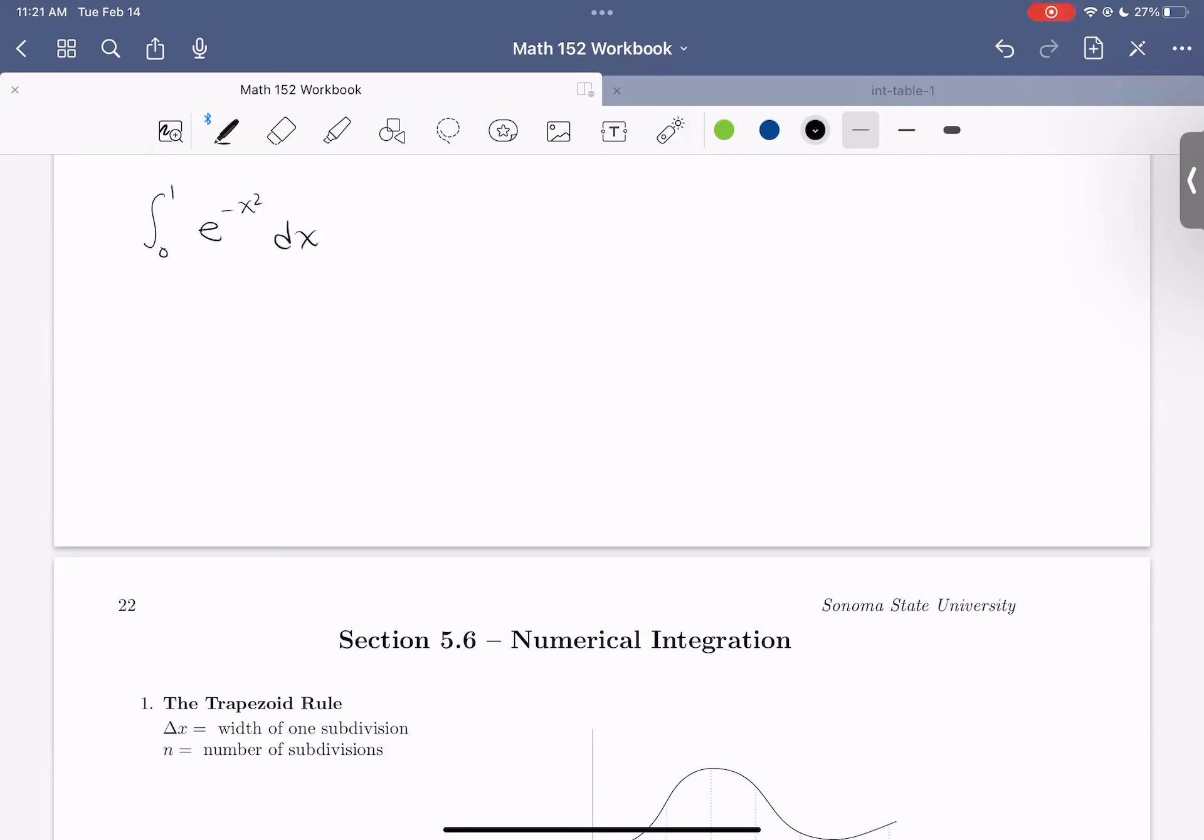So that function, e to the negative x squared, looks something like this. And if you've taken a probability or statistics class, you might have seen this integral or this function before. This function, e to the negative x squared, helps define the normal distribution. So if you've seen a bell-shaped curve, which tells you about probabilities and areas, you will have seen this type of function there.